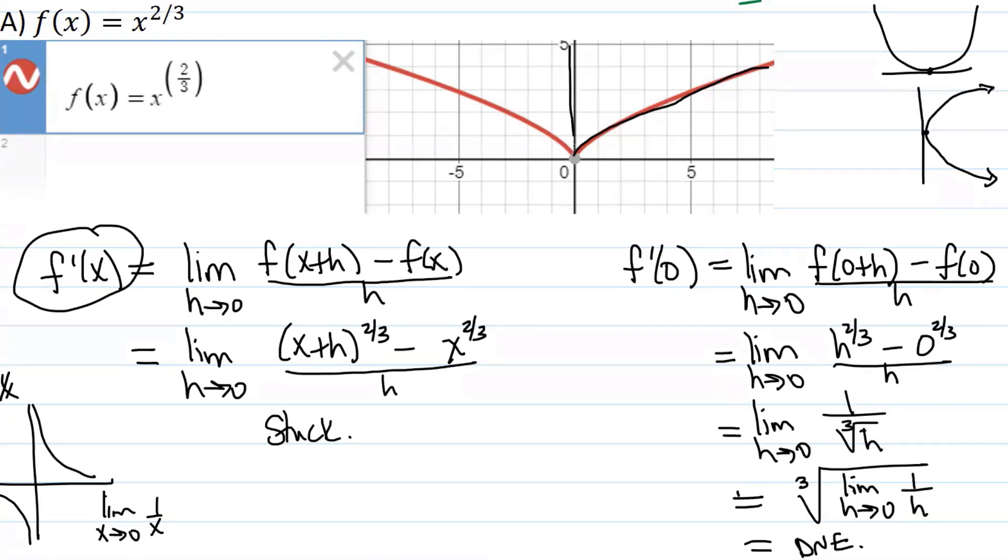So what's happening is we're getting a vertical tangent line there. And this often happens when we have a sharp point like that. That's one of the problems that arises when you're trying to find derivatives and there's a sharp point on your graph.